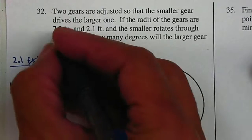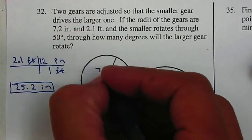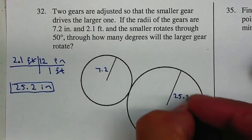So we have the smaller one will be 7.2, and the larger one will be 25.2 inches.